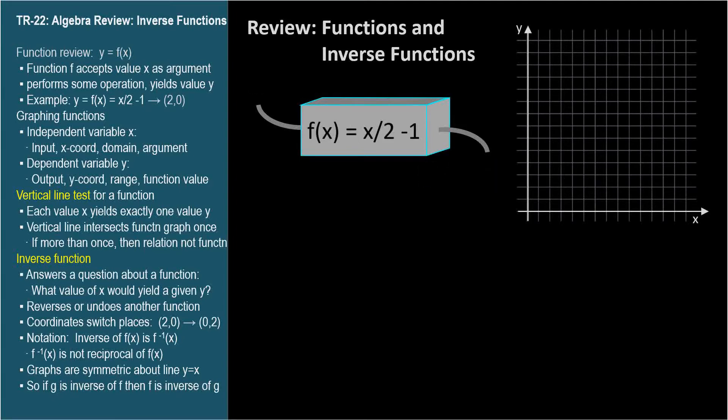Suppose our function divided x by 2 and then subtracted 1. An input value of 2 would result in an output value of 0. So when x is 2, f of x is 0. Input 8, output 3. f of 8 equals 3.